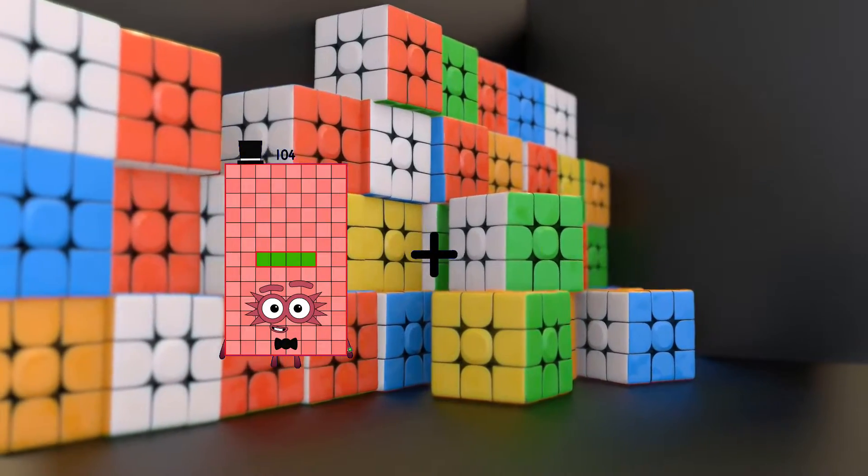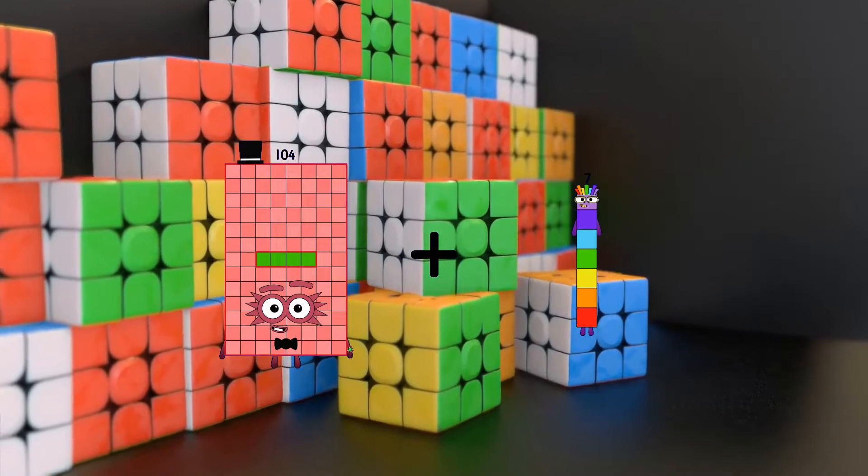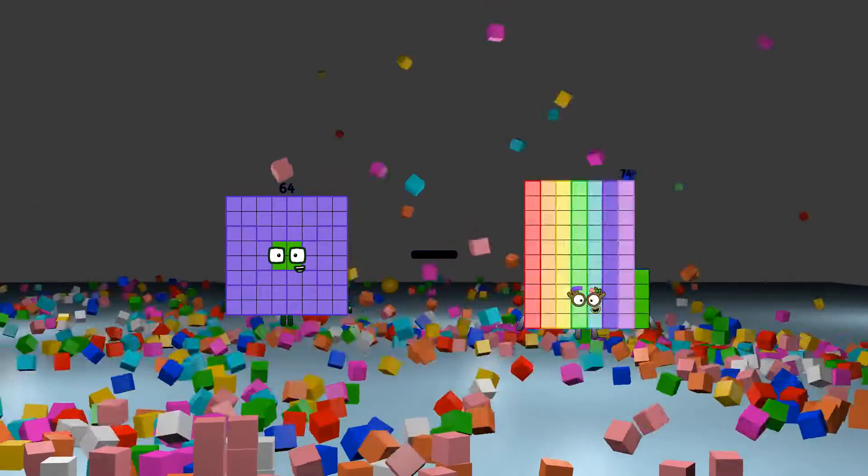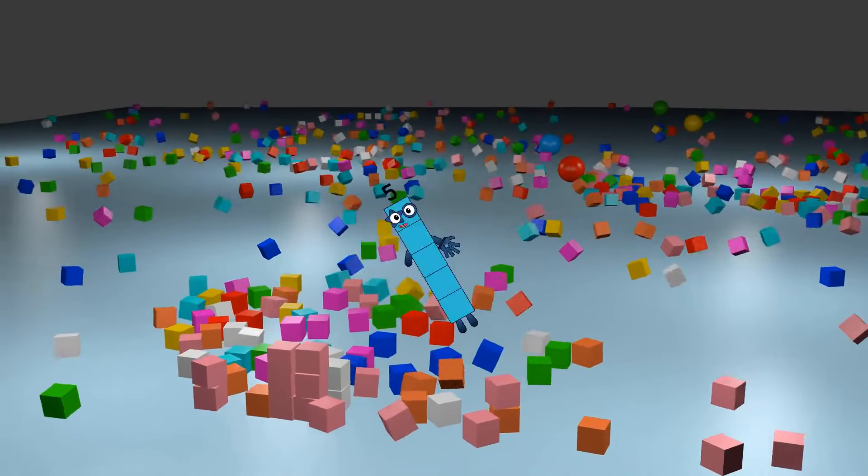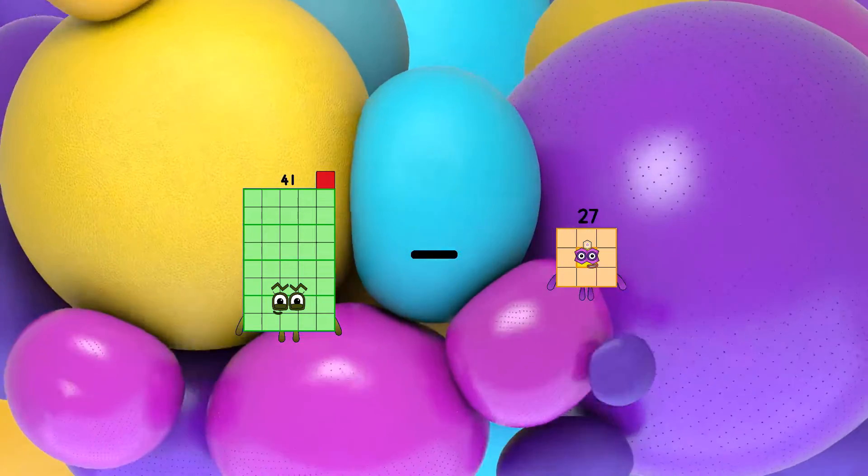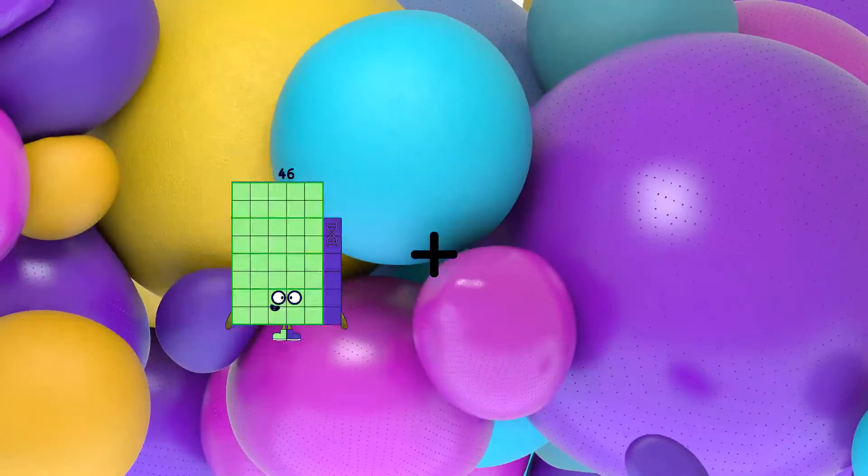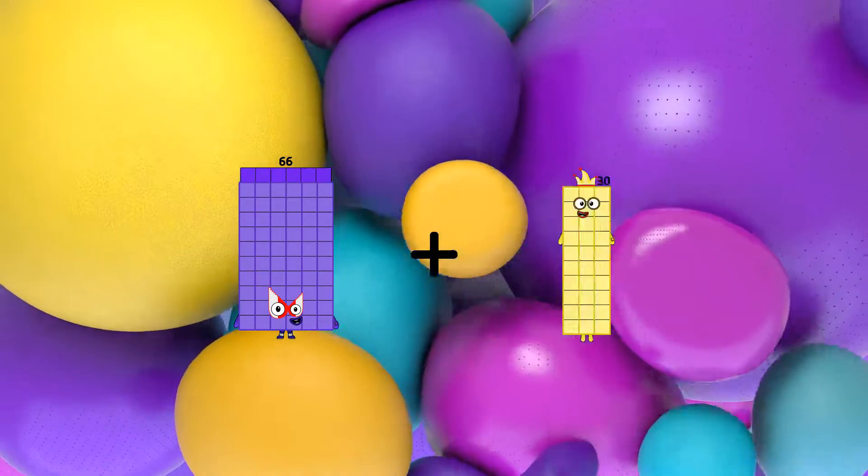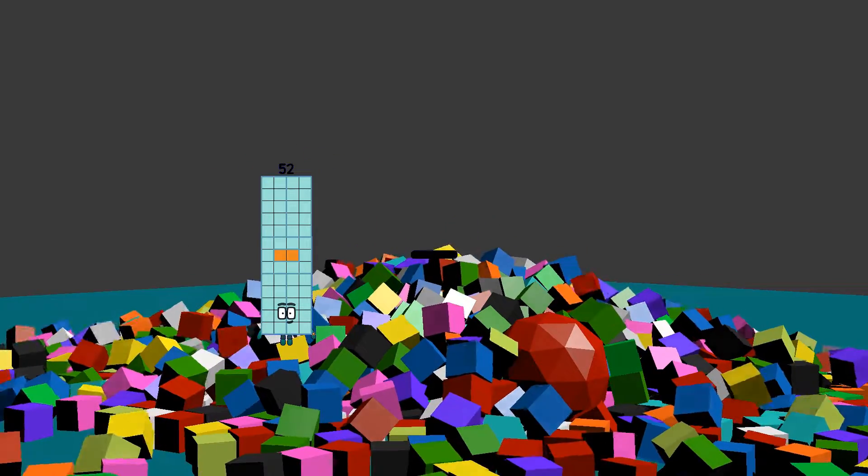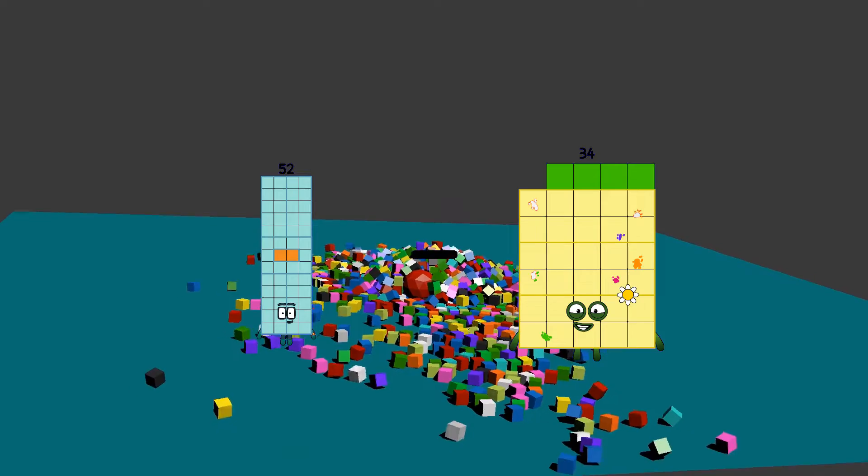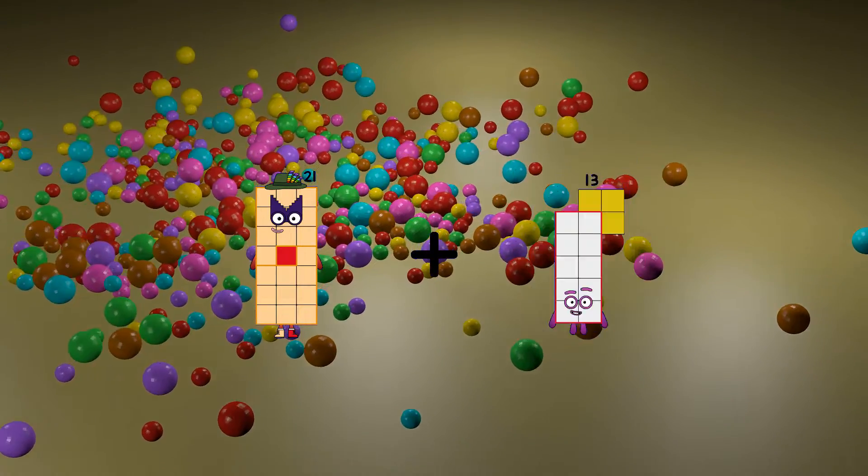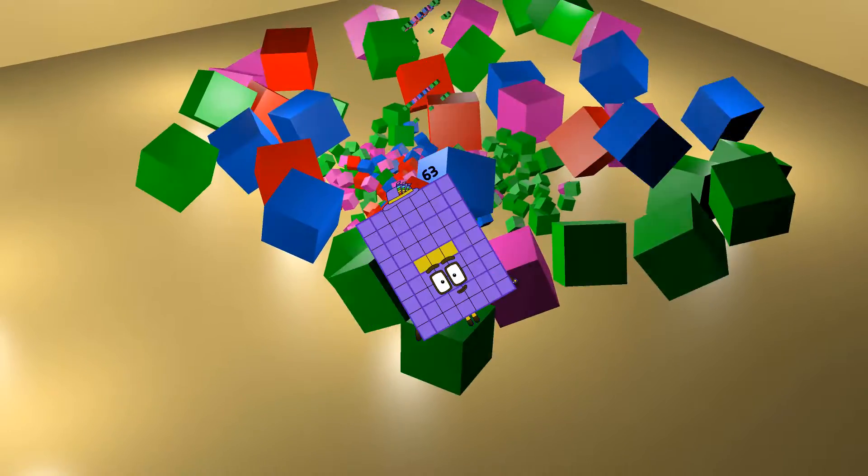104 plus 7 equals 111. 64 minus 59 equals 5. 41 minus 27 equals 14. 66 plus 29 equals 95. 52 minus 34 equals 18. 21 plus 42 equals 63.